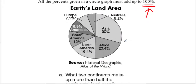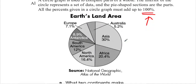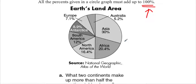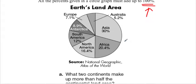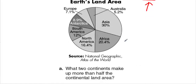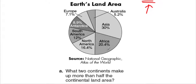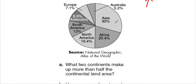Let's look at how we can use that information to answer questions. What two continents make up more than half of the continental land area? More than half means more than 50%. Asia at 30% and Africa at 20.4% together give 50.4%, which is more than half. So the answer is Asia and Africa.